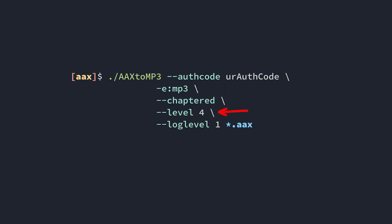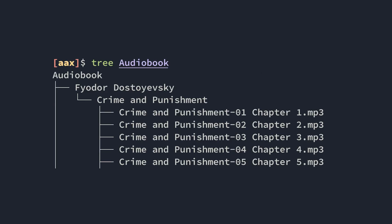I found no difference in audio quality by using level 4. If you want your book to be split up into chapters, use the "--chaptered" flag, and we use the wildcard ".AAX" to specify that this process be done to all of our Audible files in the current directory. After some time, you should have a directory named "audiobook" sorted by author, book, and chapter.